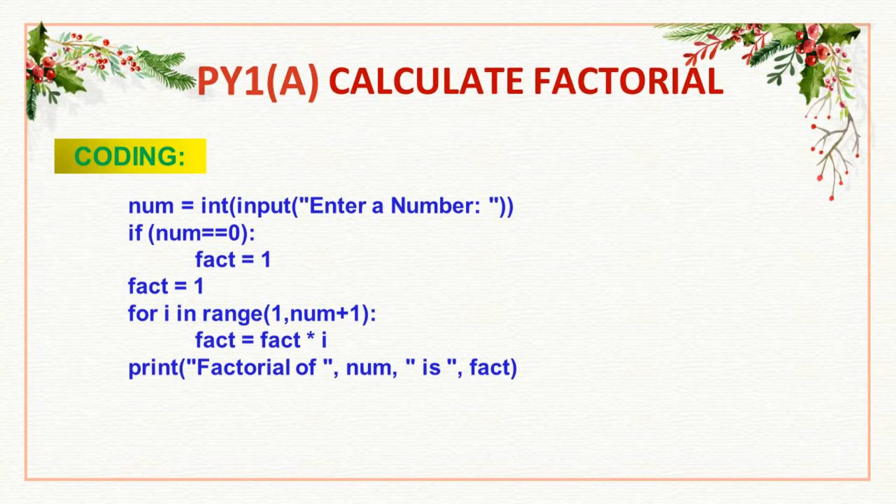Calculate factorial. The program starts with: num equal to int of input of 'enter a number' — we are going to get this from the user as the input. If num equals 0, the result is fact equal to 1. And then fact is equal to 1, which means just initialize the variable.